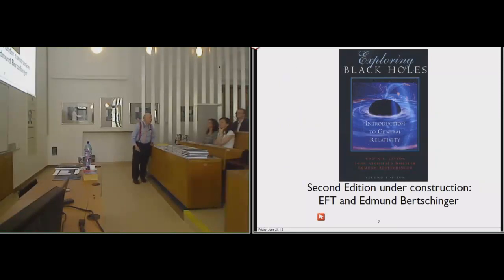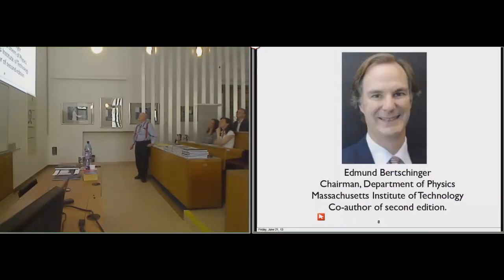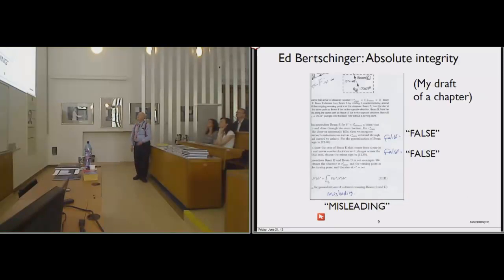You will see many Wheeler stories in Anatomy of Collaboration and Spacetime Interview on a website I will show you at the end. This is the second edition, which I am writing with Edmund Birchinger, the chairman of the Department of Physics at the Massachusetts Institute of Technology. Every collaboration is different, and Birchinger is very straightforward. I write up a piece, and he writes false, false, misleading. He is not criticizing me, he's just saying it's wrong. An experimental physicist will work a whole year before nature tells him he's wrong. I know in 20 seconds that I'm wrong.